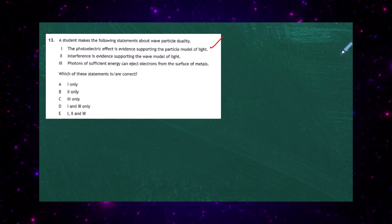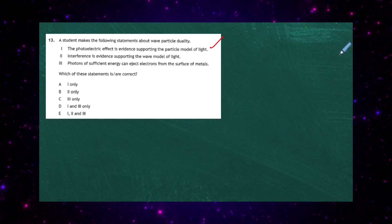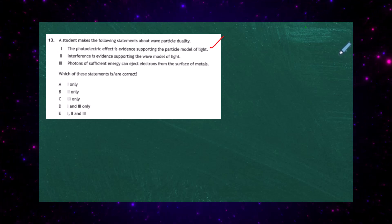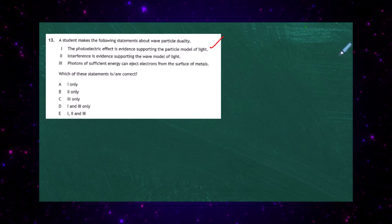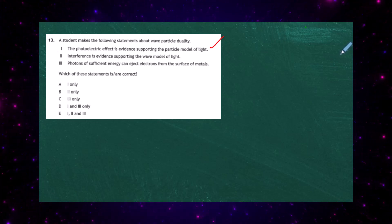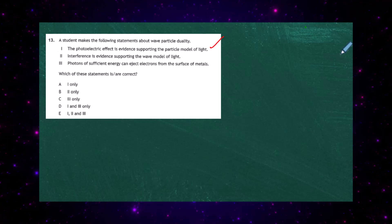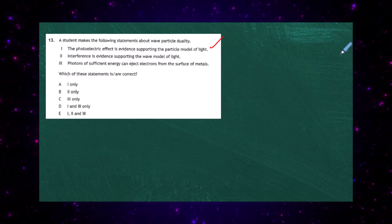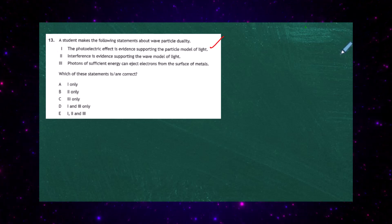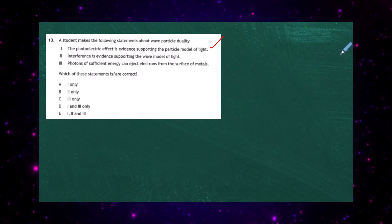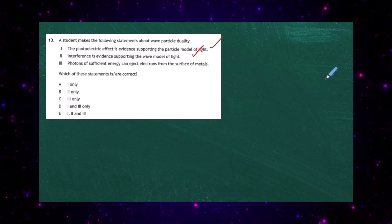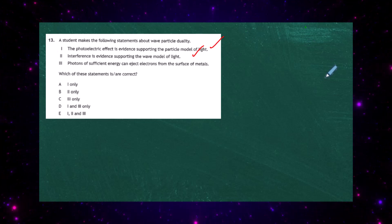Statement 1 is therefore true. Statement 2 — interference is evidence supporting the wave model of light — is also true, because only waves interfere. Two waves coming together will have crests meeting crests for constructive interference, or a crest meeting a trough for destructive interference, so interference is definitely evidence supporting the wave model of light.